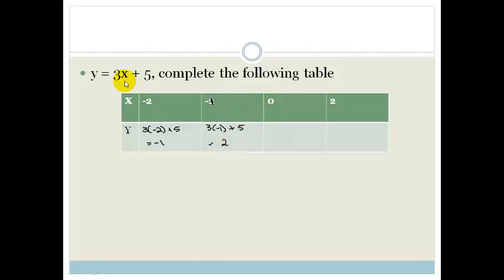If x is 0, you've got 3 times 0 is 0 plus 5, therefore it is just the answer of 5.